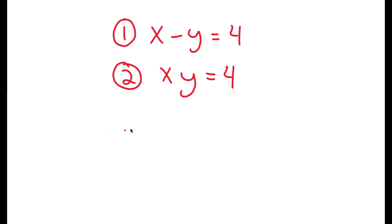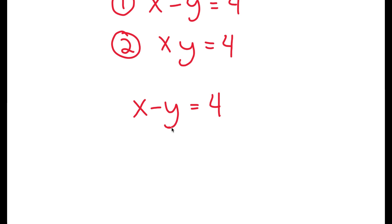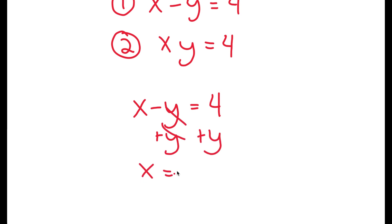What I'm first going to do is use equation 1. So we have x minus y equals 4, and I'm going to rewrite this in terms of x. To do that, I'm going to add y on both sides, and I get that x is equal to 4 plus y.